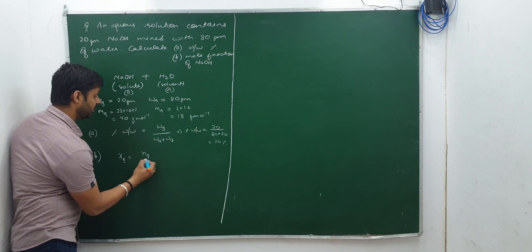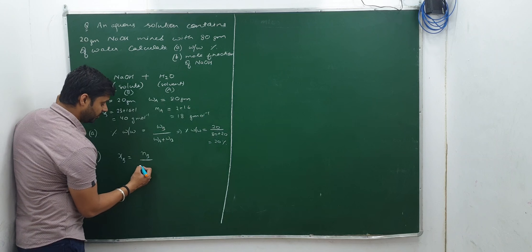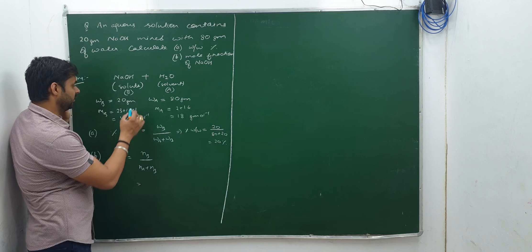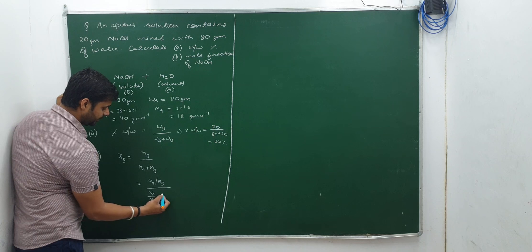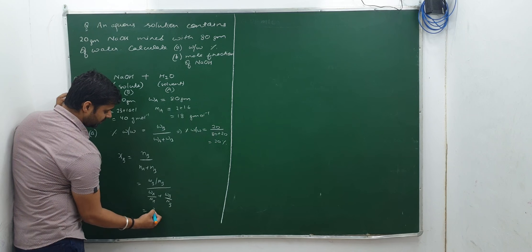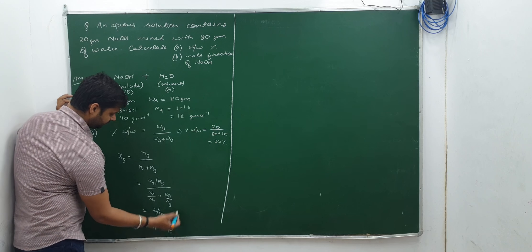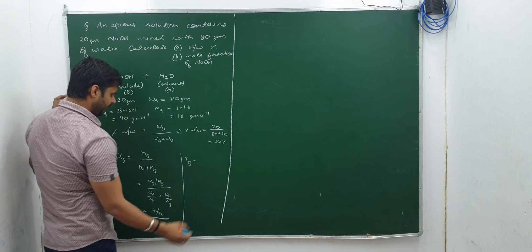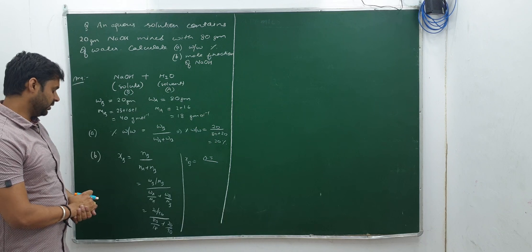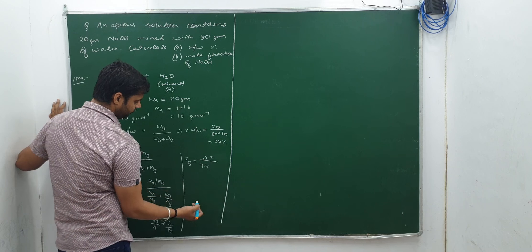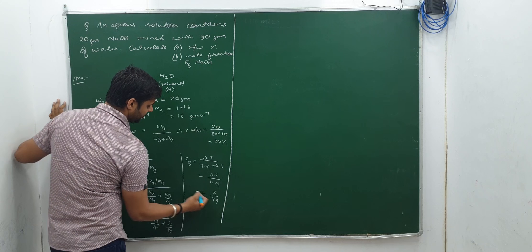Second part: mole fraction of NaOH, ξ_B = N_B / (N_A + N_B). N_B = W_B / M_B = 20/40. N_A = W_A / M_A = 80/18. So ξ_B = (20/40) / (80/18 + 20/40) = 0.5 / (4.4 + 0.5) = 0.5 / 4.9, which you can write as 5/49.